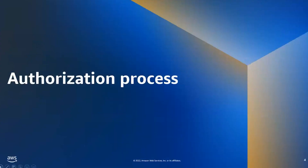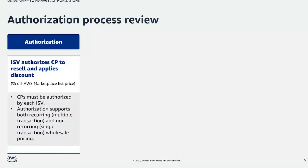Let's begin by reviewing the authorization process. There are four steps required to set up a consulting partner private offer. ISVs manage the first one — authorization. This is when an ISV authorizes a consulting partner to resell their software. ISVs manage authorization using the Partners tab in the AWS Marketplace Management Portal.